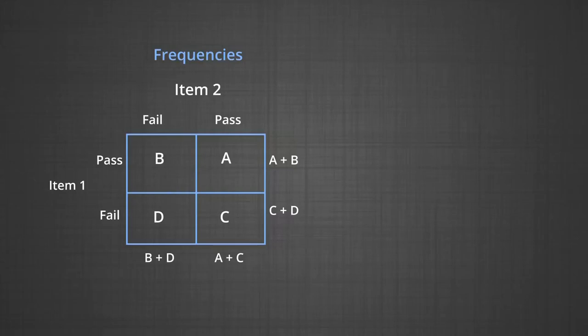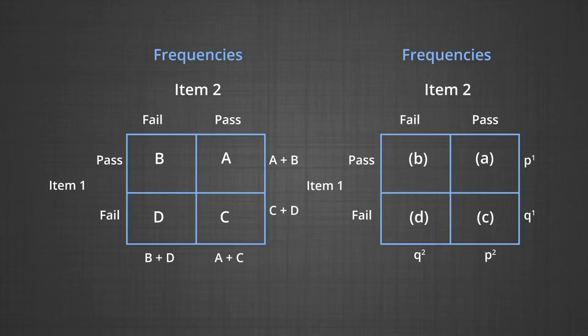We designate them in terms of smaller letters because we use proportions. For item 2 we have fail and pass, for item 1 we have pass and fail. The cells are designated as small b, small a, small d, small c. The marginal values we have are p1, q1, q2, p2.